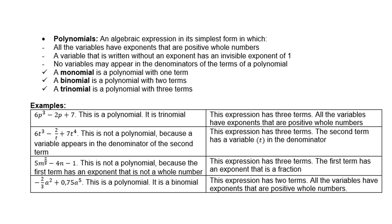6p³ - 2p + 7. This is a polynomial, and it's also called a trinomial because this expression has three terms. All the variables have exponents that are positive whole numbers. 6t³ - 2/t + 7t⁴. This is not a polynomial because a variable appears in the denominator of the second term.